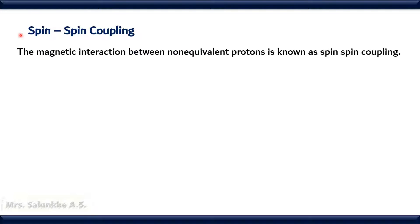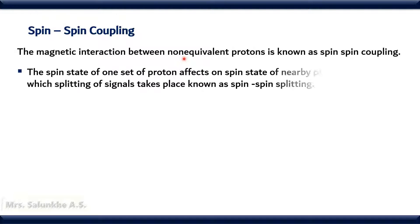Now we see spin-spin coupling. The magnetic interaction between non-equivalent protons is known as spin-spin coupling. In earlier videos we have seen what is meant by non-equivalent protons. Set of protons which come under resonance at different magnetic field strengths are known as non-equivalent protons. In case of non-equivalent protons, they have different chemical and electronic environment, and the coupling always takes place between non-equivalent protons.